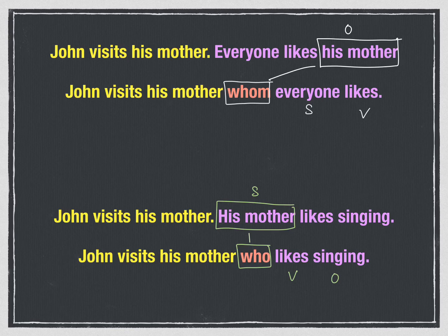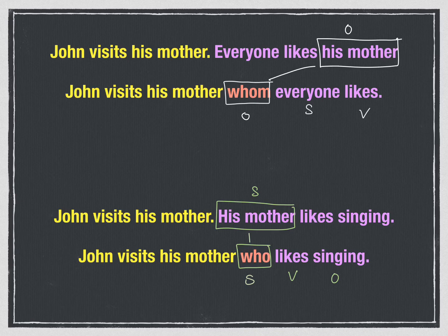After whom, you can see it is followed by a subject and then a verb — 'everyone likes.' But after who, you don't see a subject; you see the verb directly following the word who. So what conclusion can you draw? If we use a WH word for people and want to replace the subject of the original sentence, we use who; after who, the verb follows directly, because who already replaces the subject.